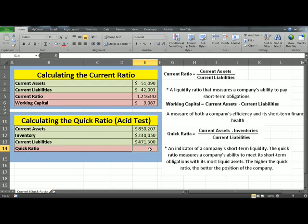In this ratio, the formula is Current Assets, minus Inventory, divided by Current Liabilities.